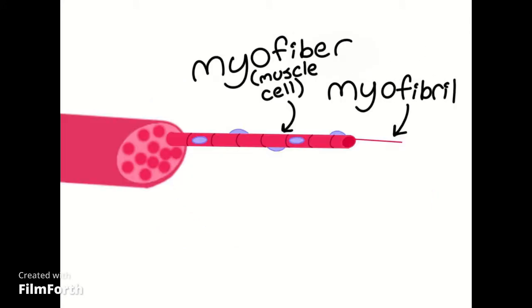Each fascicle is a bundle of muscle cells, also called myofibers. Within each myofiber, there are lots of long cylindrical organelles called myofibrils.